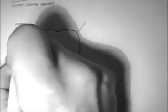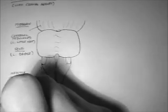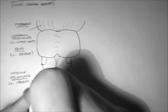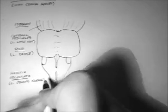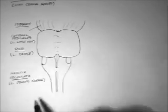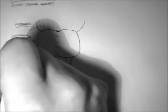The pons is actually Latin for a bridge, because it has a lot of bridging fibres. And the medulla oblongata is Latin for the oblong kernel — which I can make no sense of anyway.